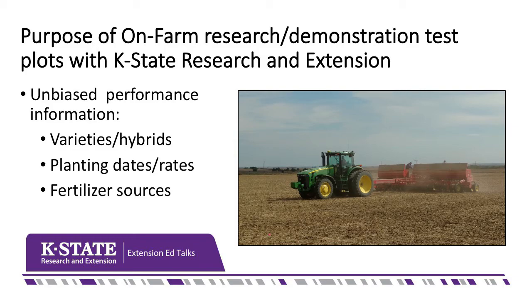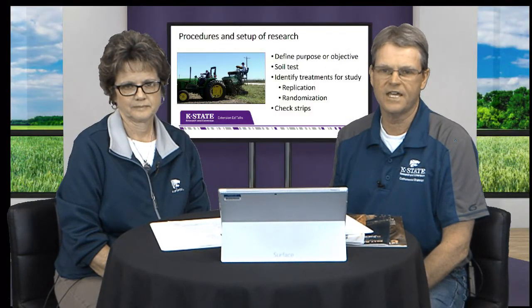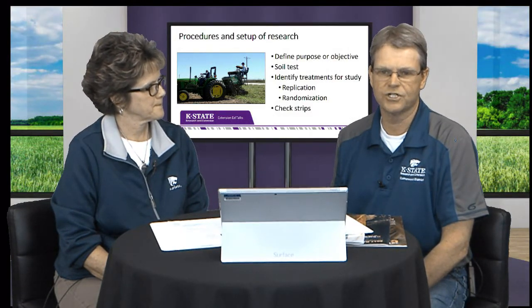The purpose of on-farm research or demonstration test plots with K-State Research and Extension — one of the main thrusts of our organization is unbiased, research-based information. We can do that by looking at different wheat varieties, different milo and corn and soybean hybrid performance tests, planting dates, seeding rates, different fertilizer sources and amounts, herbicide treatments, and the scope of it can just be never-ending. That's one of our main focuses — to do some on-farm research with the farmers in our counties so they can see what's going on, come out and ask questions, and visit with our specialists and Extension agents.